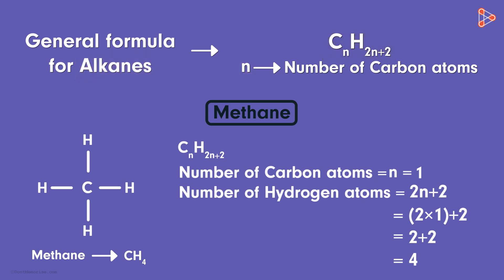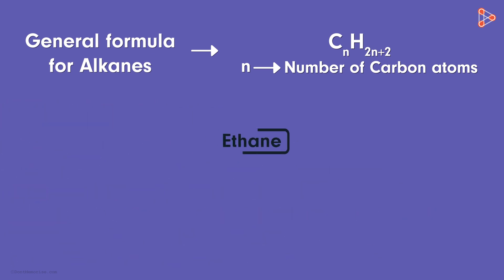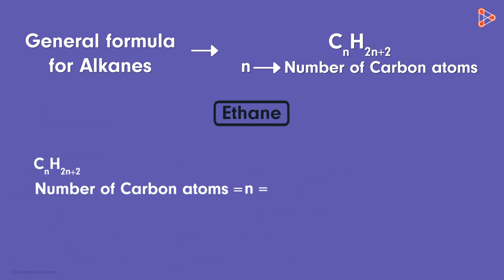We know that the alkane with 2 carbon atoms is ethane. 2 carbon atoms means the value of n in the formula will be 2. What about the number of hydrogen atoms?